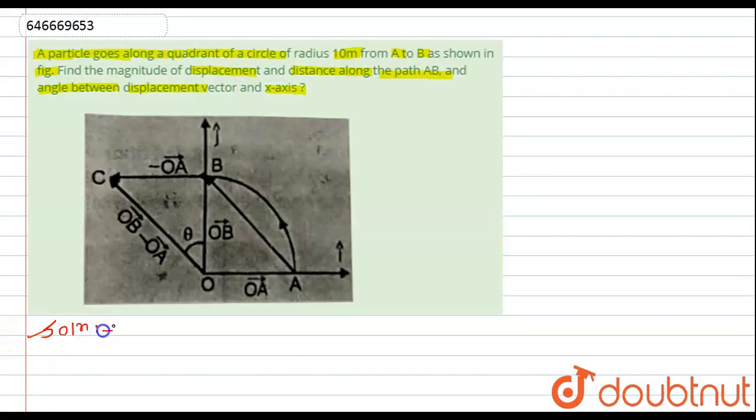Here we can see that we have given a diagram in which a particle goes along a quadrant of a circle whose radius is 10 meter from A to B.